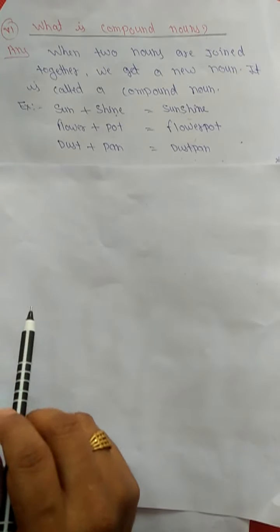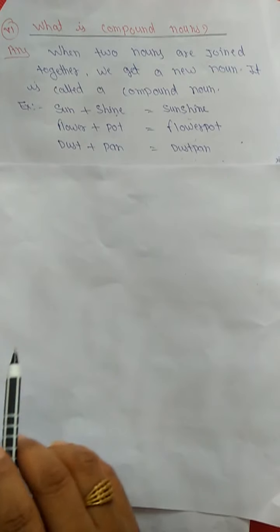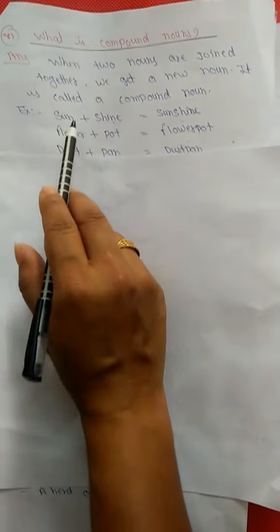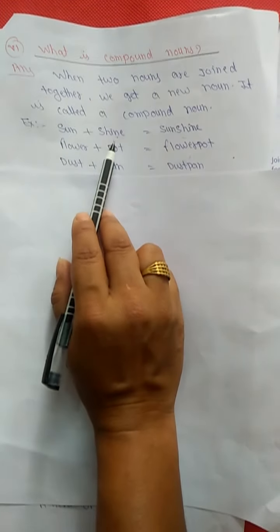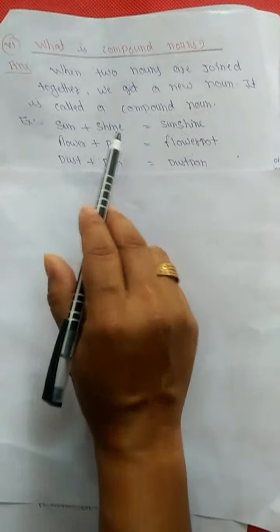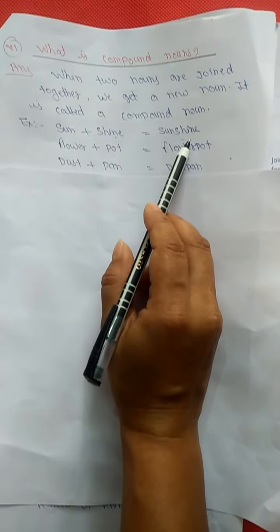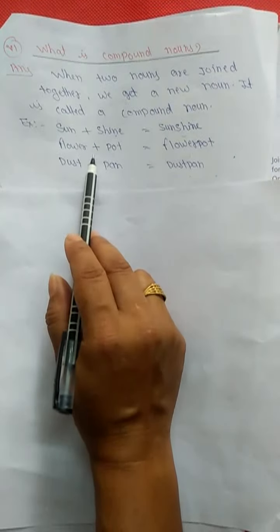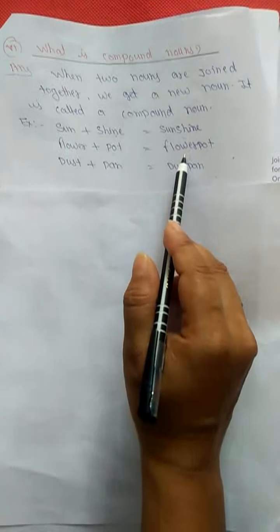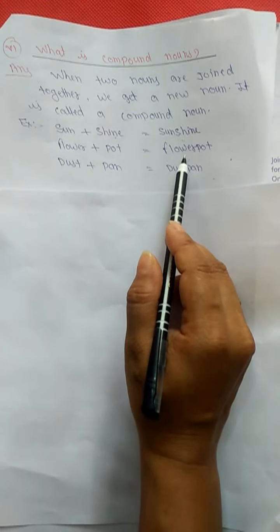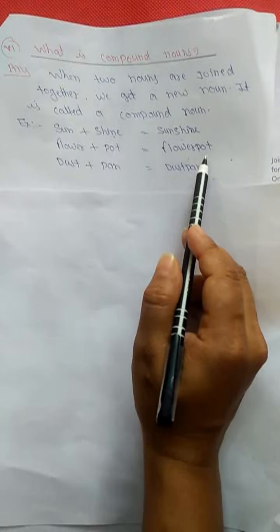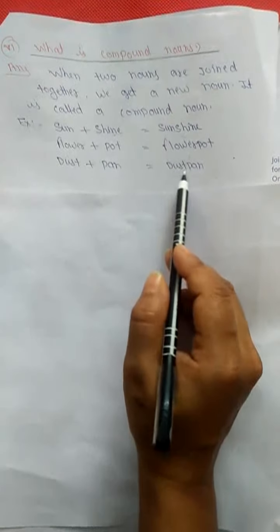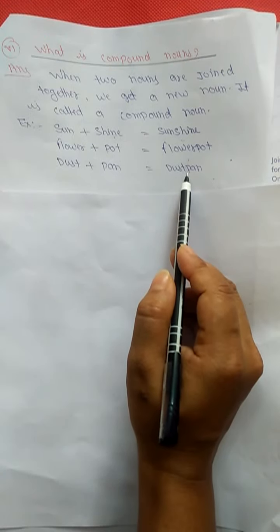Let's look at examples. We add two nouns together and when joined, they become a new noun. Sun plus shine becomes sunshine. Flower plus pot becomes flower pot. Dust plus pan becomes dustpan.